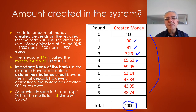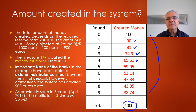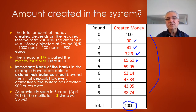As previously seen in the measures of aggregate money, the multiplier in Europe is about three, because M1 — which contains demand deposits — is about three times equal to the monetary base, which is the cash reserves of the banking system.